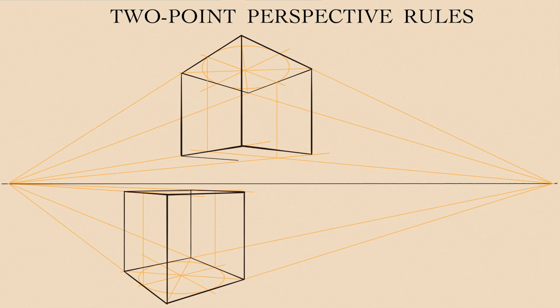All straight lines in this type of perspective will remain straight in drawing. This type of perspective comes with such distortions as foreshortened dimensions, skewed angles, and tilted vanishing lines.